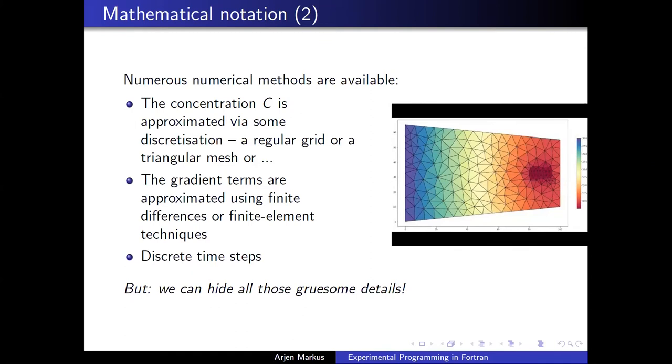Of course, for the solution of these equations, we have numerous numerical methods and numerous ways to deal with the fact that the concentration is a function over space and time. So we have rectangular grids. We have triangular meshes. You can have them in two or three dimensions. The gradient terms, they can be approximated using finite differences, finite elements, or perhaps a whole lot of other methods. But in general, we are used to deal with all these gruesome details. And the thing I'm going to show you next is that it's possible to avoid all that.